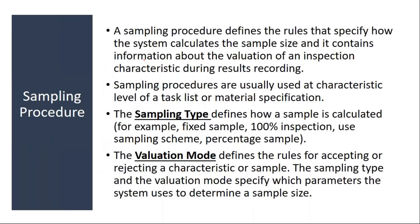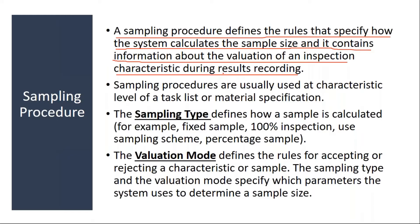Sampling procedure defines the rules that specify how the system calculates the sample size, and it contains information about the valuation of an inspection characteristic during results recording. Basically, sampling procedure will tell you what is the sample quantity — how much sample quantity the analyst has to take from the total lot. That is calculated by the sampling procedure. It will also give you the valuation mode — how the valuation has to be done for the characteristics.